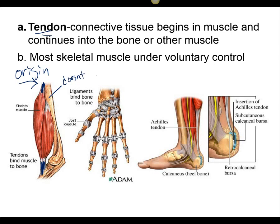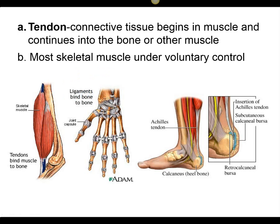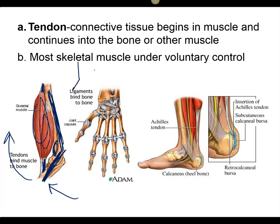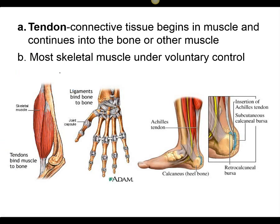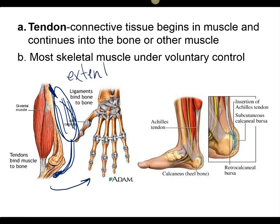A tendon attaches our muscles to bones. Where a muscle attaches is called the point of origin — that's where it attaches to the bone that doesn't move, like the humerus. The bicep attaches to the humerus at the origin, and inserts into the radius. When the bicep shortens, it pulls the forearm upward. When the angle at the joint gets smaller, that's called flexion — it's a flexor. The tricep has its point of origin and insertion on the other side. When it shortens, it extends the arm — that's called an extensor.